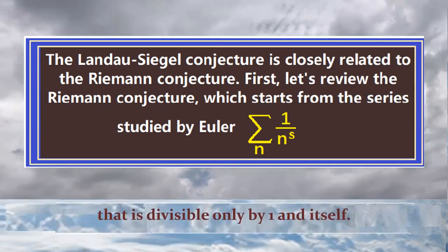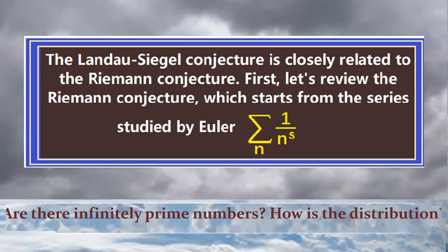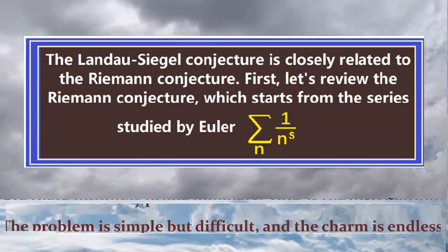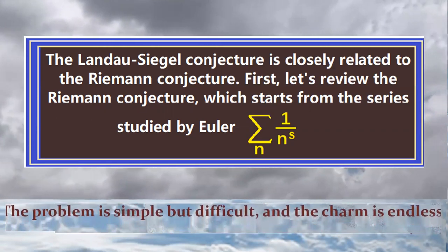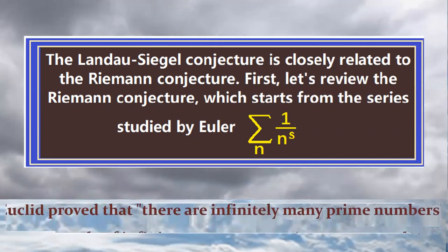A prime number is a natural number greater than one that is divisible only by one and itself. Are there infinitely many prime numbers? How is the distribution? The problem is simple but difficult, and the charm is endless.